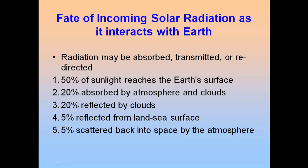Just like a budget that we would normally have, the Earth also has its own budget. When we think about all of the incoming solar radiation we get from the Sun — our main source of energy — what does the Earth do with all of that heat energy? When you break it down, 50% of all that solar energy reaches the Earth's surface. Out of 100% of solar radiation coming in, only 50% on average reaches the surface of the Earth.